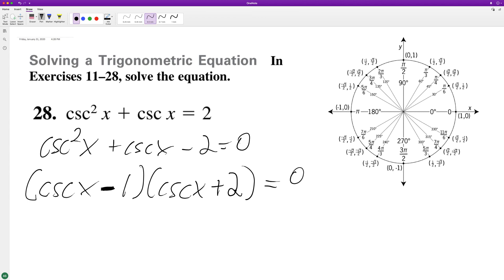So where's cosecant x minus 1 equal 0? Cosecant of x equals 1, same thing as sine. So it's going to be equal to pi over 2.